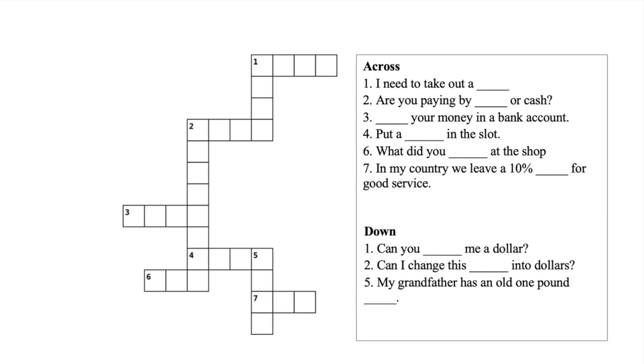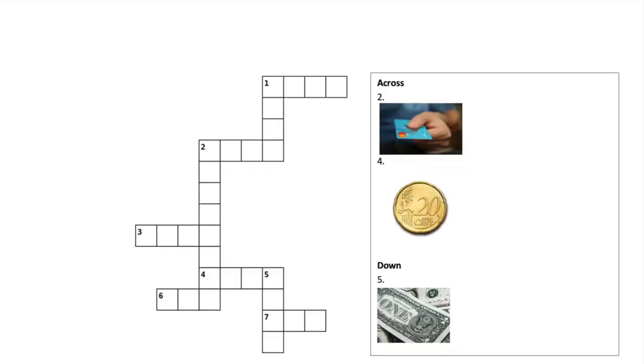You can go on a site like Pixabay and find the images for free. What I might do is I might take, for two, four and five, which are the words 'card,' 'coin,' and 'note.'